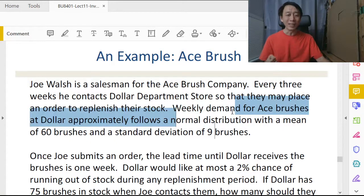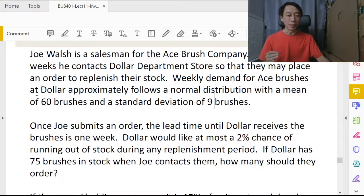Then we are further given weekly demand is approximately normal distribution, a mean of 60, standard deviation of 9. That's fine. We know weekly demand and we know the periodic review interval, that's three weeks. The lead time is one week, so protection interval is already known, that's three plus one, that's four weeks.